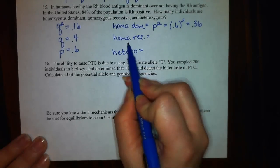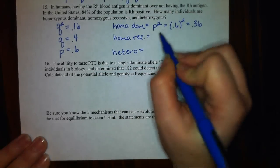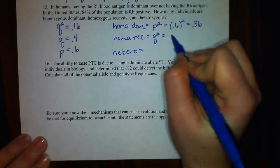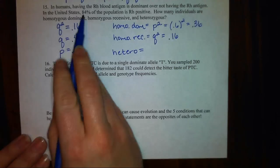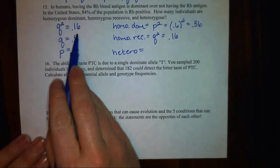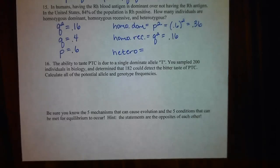Homozygous recessive, I already determined that 16% of the population is homozygous recessive. I worked that out because 84% showed the dominant trait, leaving 16% to show the recessive trait. And you have to be homozygous recessive to show the recessive trait.